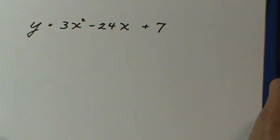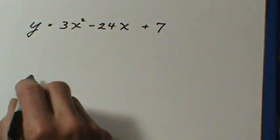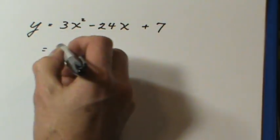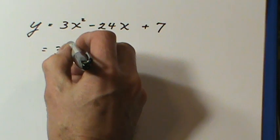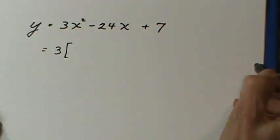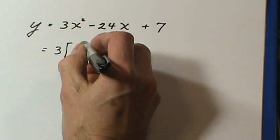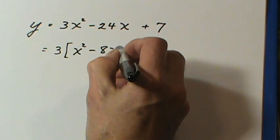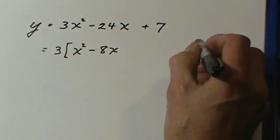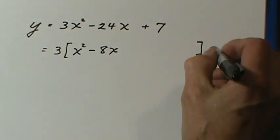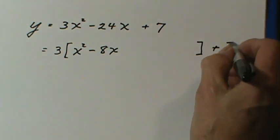Now, it gets a little more complicated if there's a number in front of the x squared. That number has to be factored out of the first two terms. So, if I factor the three out, I've got x squared minus eight x. Now, leave some room inside the bracket. Move the seven over here to get it out of the way.